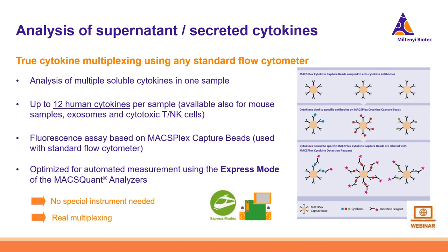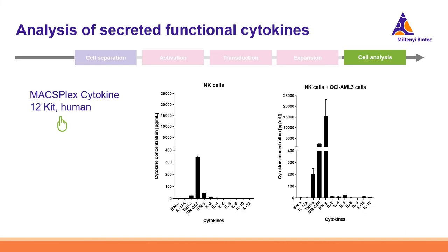In an application note, there is a panel describing staining for many chemokine receptors, showing an example with four receptors on either unstimulated or IL-15-stimulated NK cells, where you can nicely see differences between the chemokine receptors. Another flow-based assay is the MAXplex assay, where you can measure up to 12 human cytokines from one sample — detecting released cytokines from NK cells in the supernatant using any standard flow cytometer. When using the MACSQuant, this can be automated and made even easier.